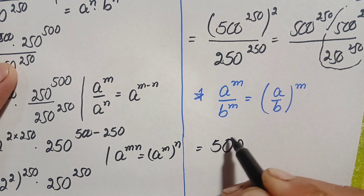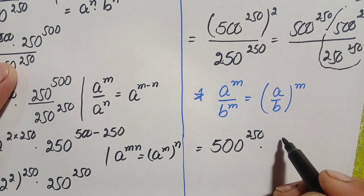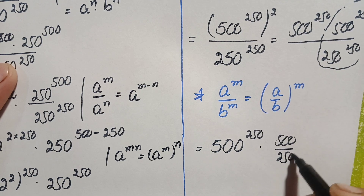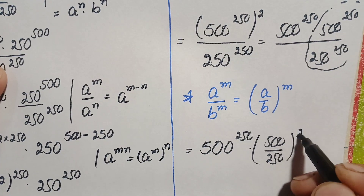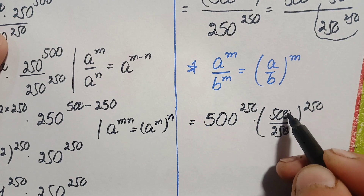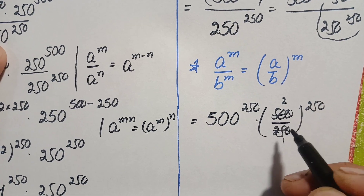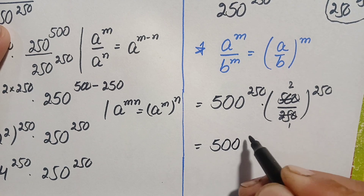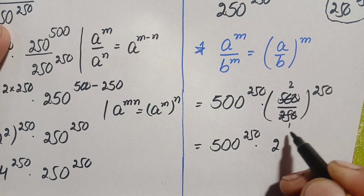Applying this identity, we get 500 raised to power 250 times (500 divided by 250) raised to power 250. Simplifying 500 divided by 250: the zeros cancel and 25 divided by 25 gives 1, so 500/250 simplifies to 2. This becomes 500 raised to power 250 times 2 raised to power 250.